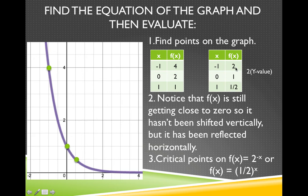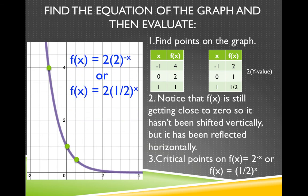I know what I'm doing to my y-value to go from 2 to 4 is multiplying by 2. So 2 times 2 is 4, 1 times 2 is 2, and one-half times 2 is 1. I'm multiplying the y-value by 2, which is a vertical stretch. Since it's a vertical stretch, I need to put a 2 on the outside of the function. So I can write f of x equals 2 times 2 to the negative x, or f of x equals 2 times one-half to the x.